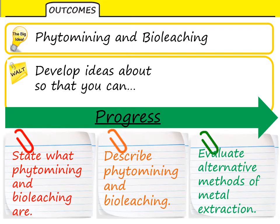The title of this lesson is Phytomining and Bioleaching. And we're going to have a look at what they are. We're going to describe the processes of phytomining and bioleaching, and also look at the advantages and disadvantages of the different methods of extracting copper, and evaluate these methods of metal extraction.